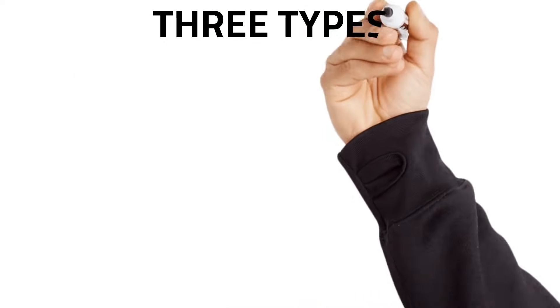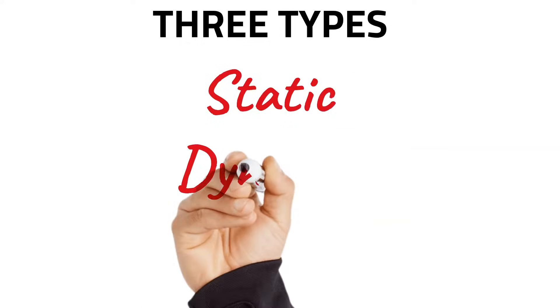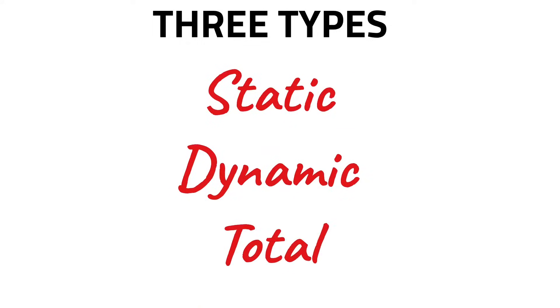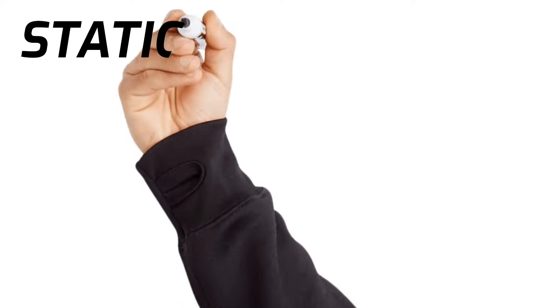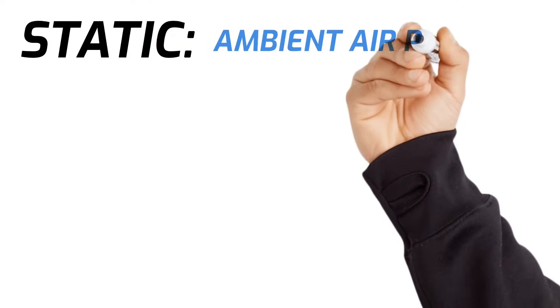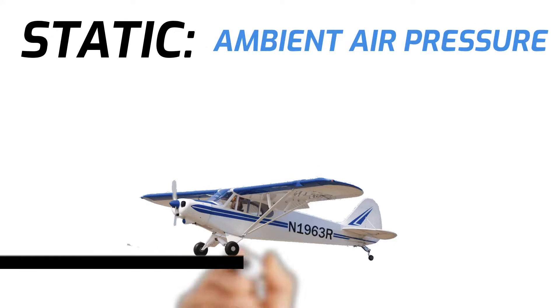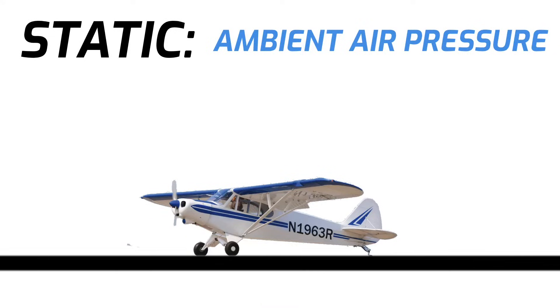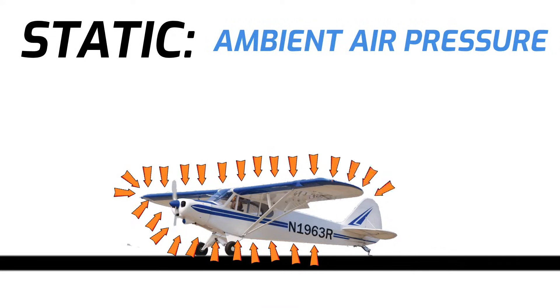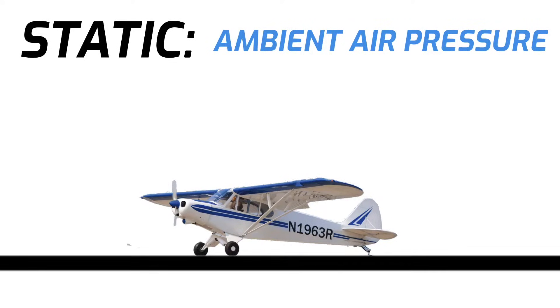There are three types of air pressure that come into play when we talk about these instruments: static air pressure, dynamic air pressure, and total air pressure. Static pressure, which is also called ambient air pressure, is pressure that's caused by our atmosphere. This is always present whether the airplane is stopped or moving. And although it might seem unnoticeable to you, these air molecules push on everything in our atmosphere.